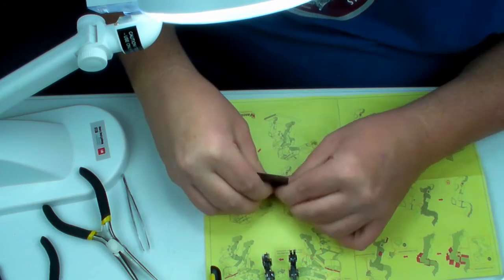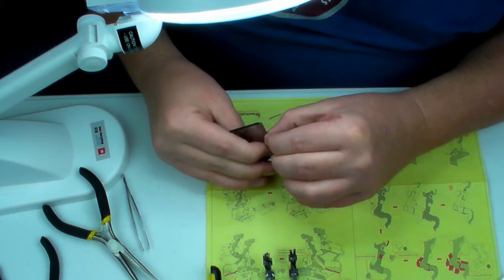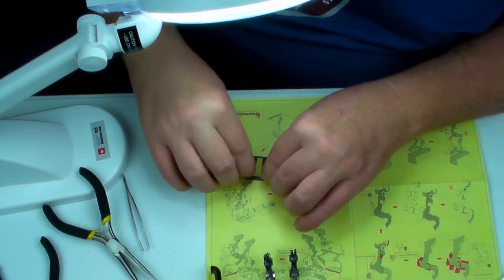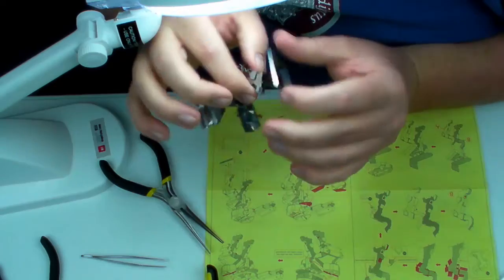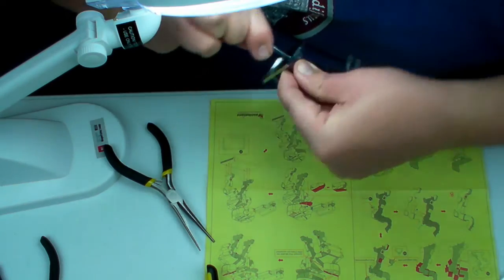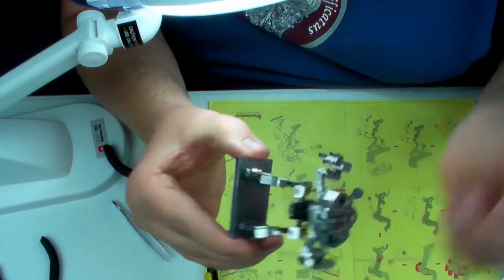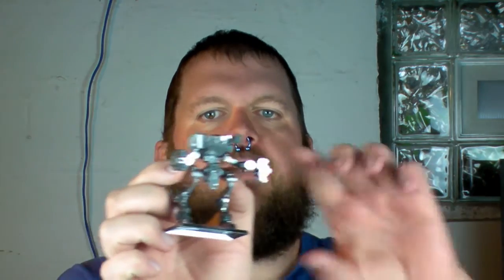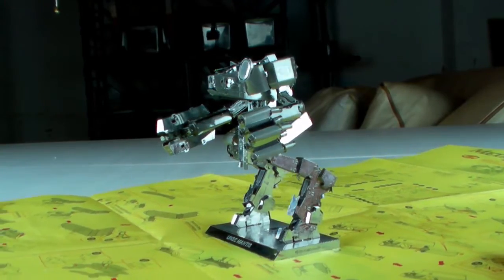Because the sides are so long on the base, I bend them over by pushing against the table. This keeps them from warping. And ladies and gentlemen, introducing the Halo Mantis. I am quite happy to be done with this kit.